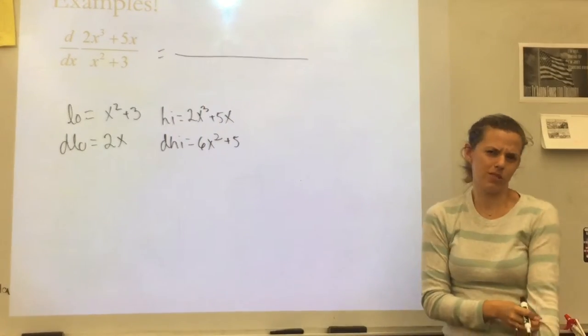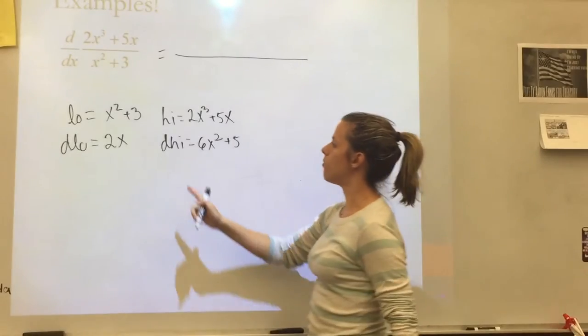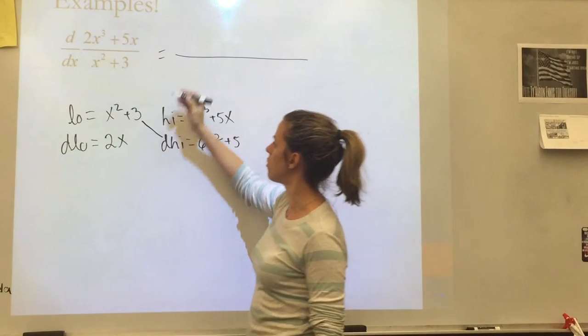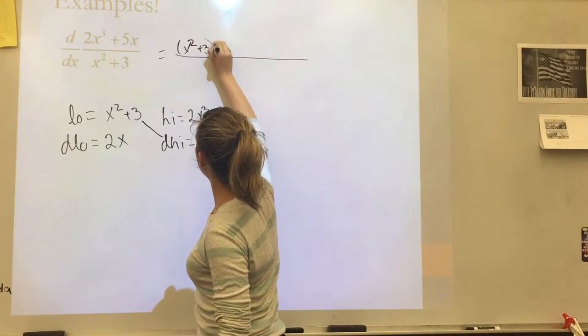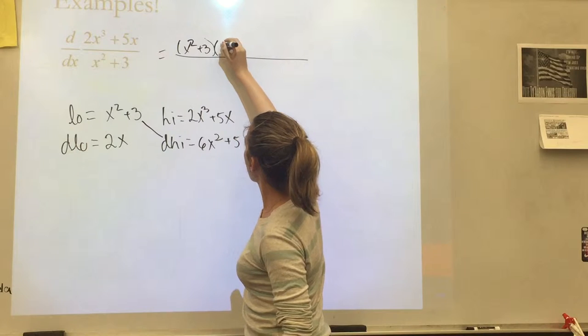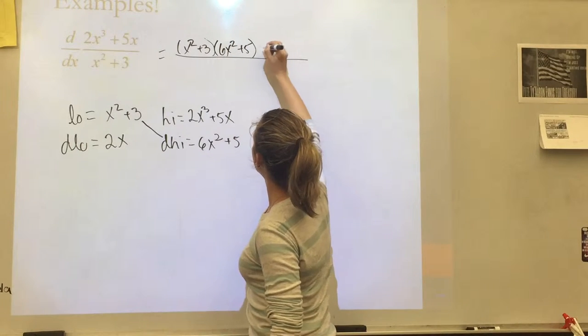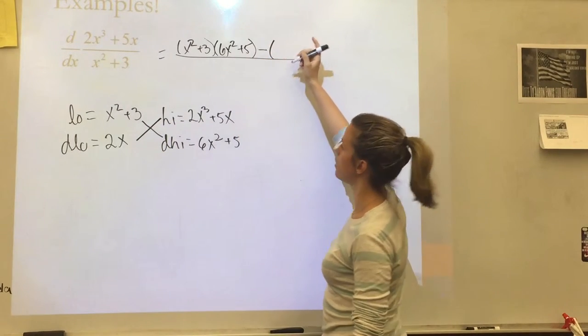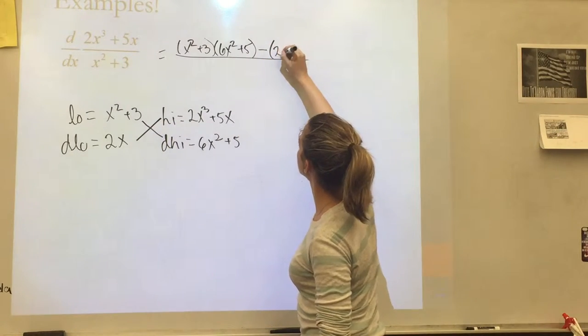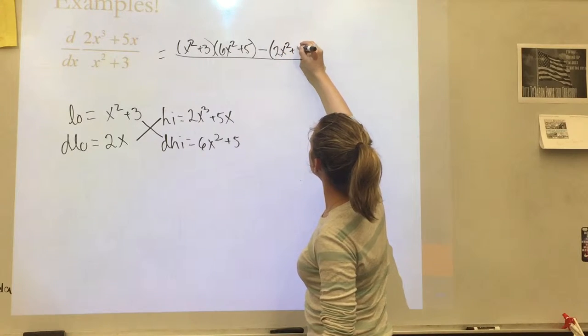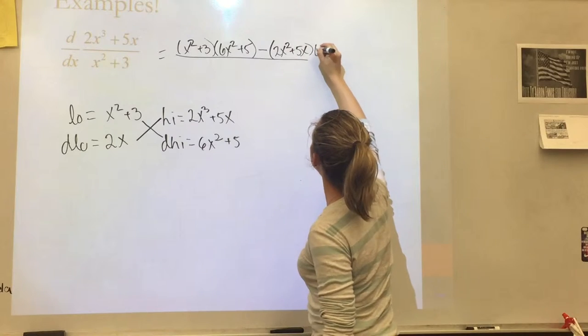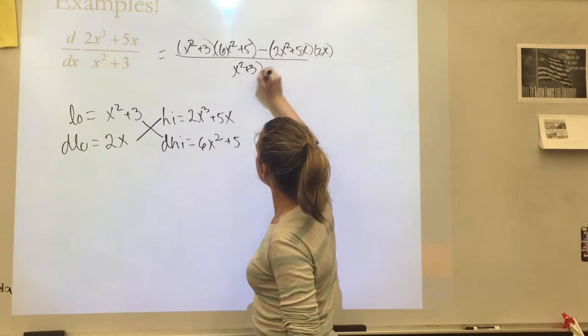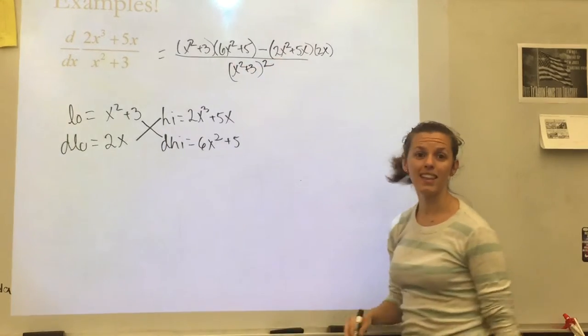So now let's put it into my formula. So I know my answer is going to be a quotient, so I start by drawing out a quotient. Low d-high. So kind of like the product rule, I am crossing. I'm going to make these crisscrosses too. So low, x² + 3, times d-high, 6x² + 5. Minus high d-low. This is why order is important here, because of the subtraction sign. 2x³ + 5x times d-low, 2x. Over low squared, (x² + 3)². And that's my answer.